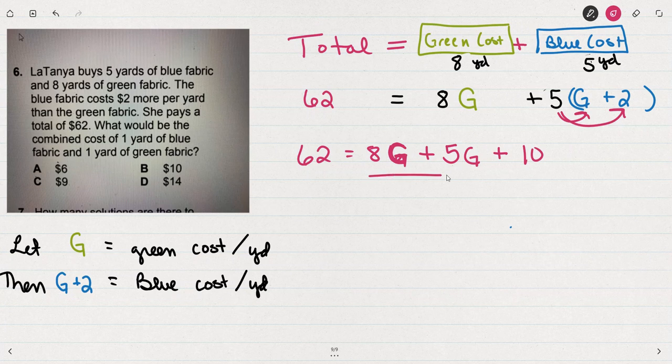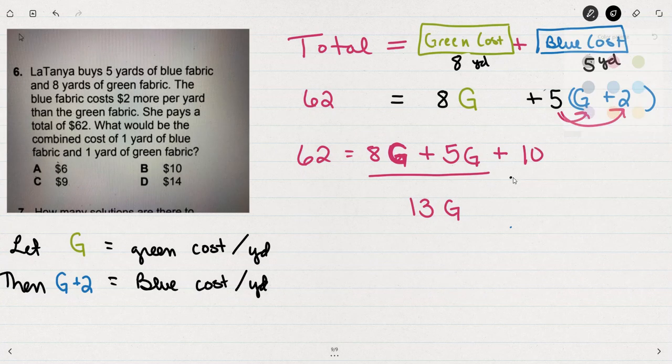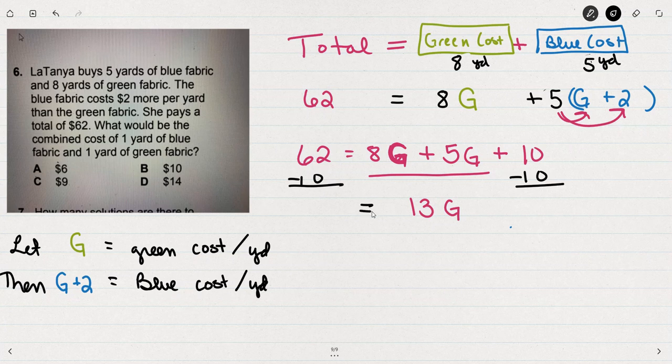I can then use my algebra to add 8G plus 5G. And I can subtract 10 from both sides. So I have 52 equals 13G.